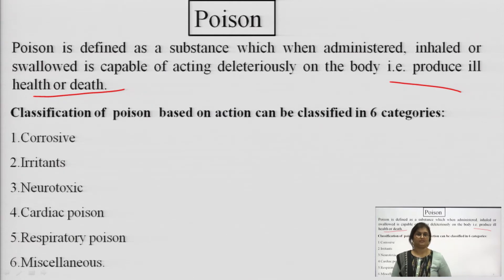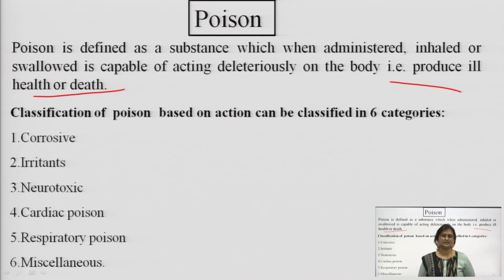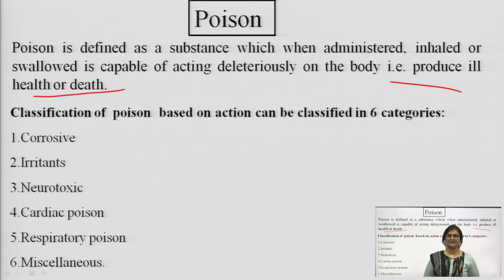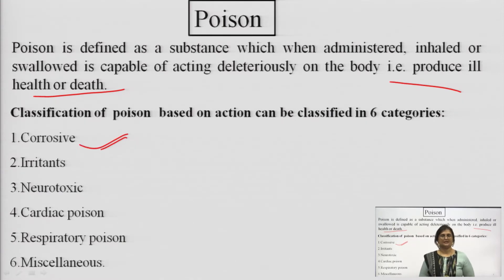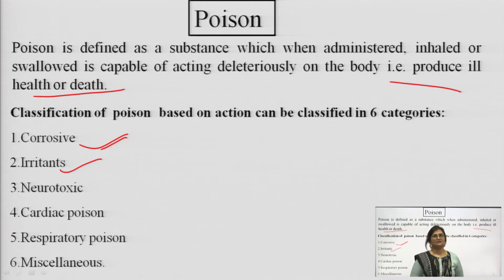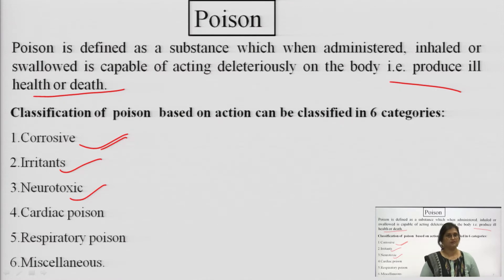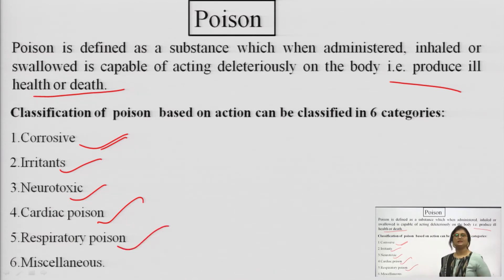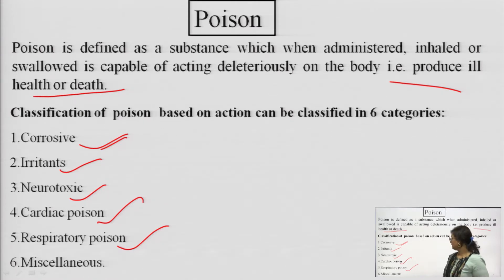Classification of poison: based on their mode of action, poison can be classified into six categories. Number one, corrosives — they are corrosive towards the tissues or cells. Irritants. Neurotoxic — toxic towards our neurons. Cardiac poison — poison for heart tissues. Respiratory poison — toxic for our respiratory system. And miscellaneous.